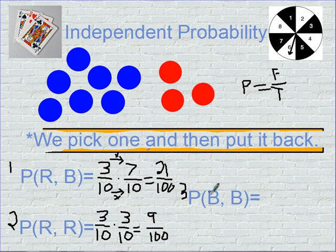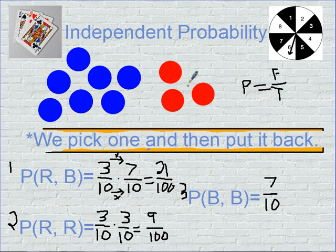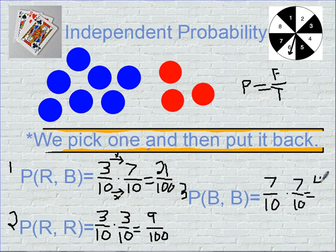The probability of getting a blue one first is going to be seven total favorable outcomes out of the ten marbles altogether, multiplied by seven out of ten again. And the answer is going to be forty-nine out of one hundred.